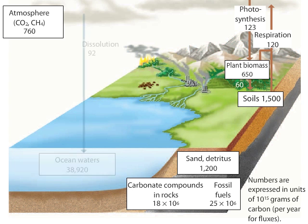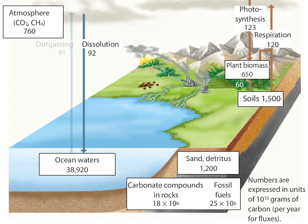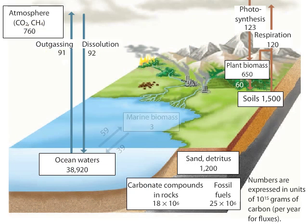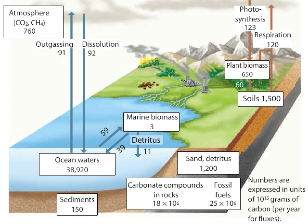Carbon dioxide is also rapidly exchanged between the atmosphere and the surface waters of the oceans. The rate at which carbon dioxide dissolves in the ocean slightly exceeds the rate at which it outgasses for two reasons. First, some of the dissolved carbon dioxide is converted into organic compounds by phytoplankton, such as diatoms. Most of this carbon is then recycled in surface and deeper waters through the trophic interactions of aquatic organisms, but gravity moves a steady rain of organic detritus into the benthic zone.